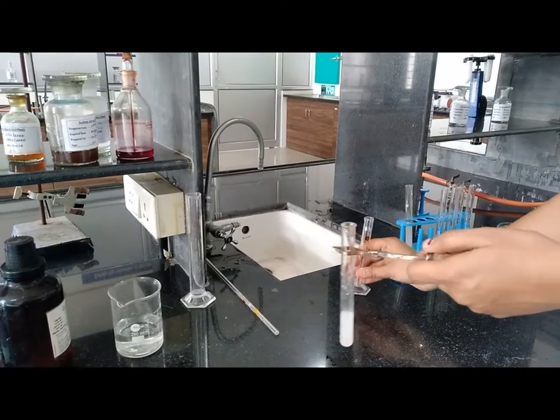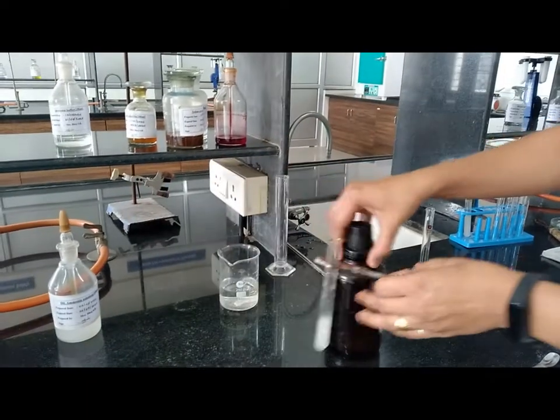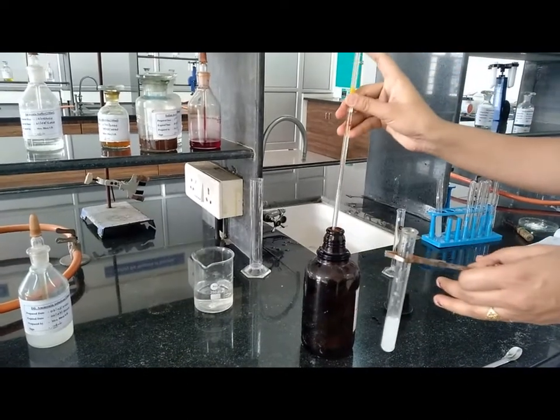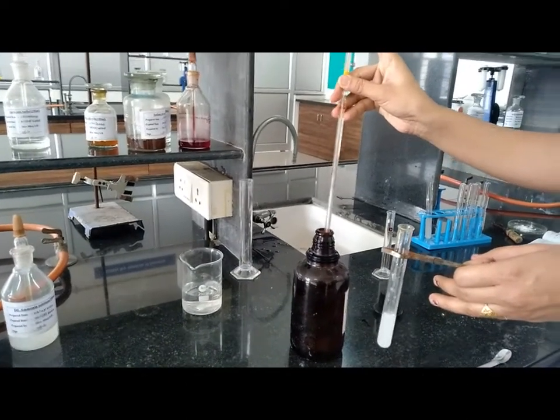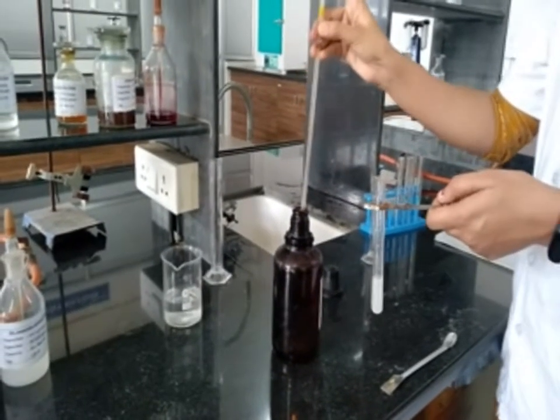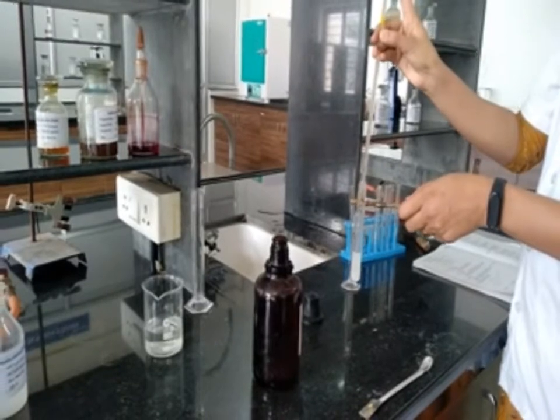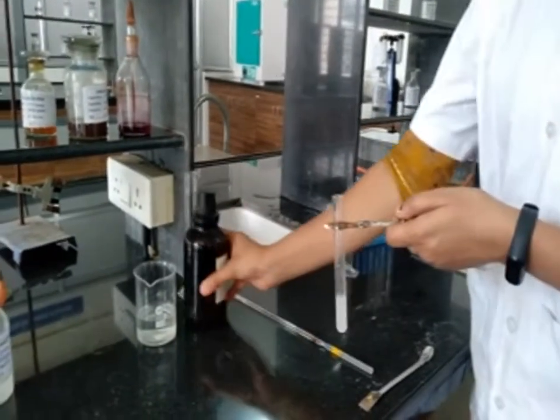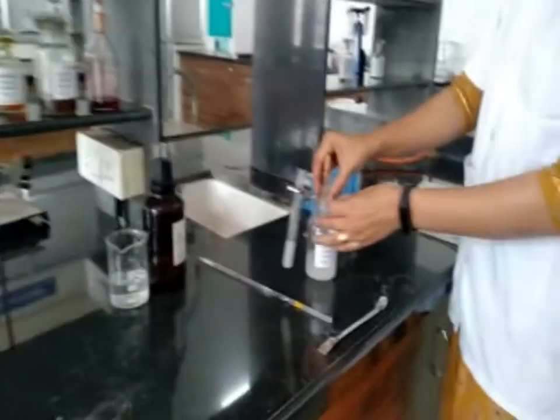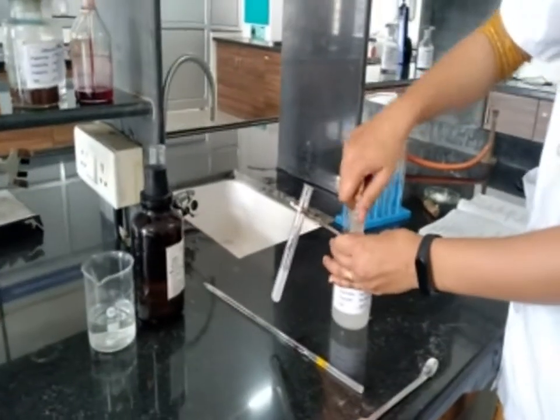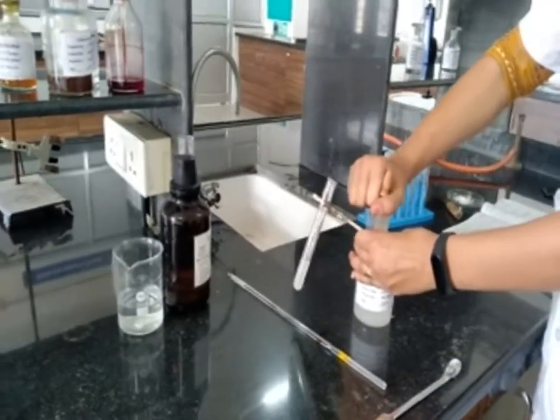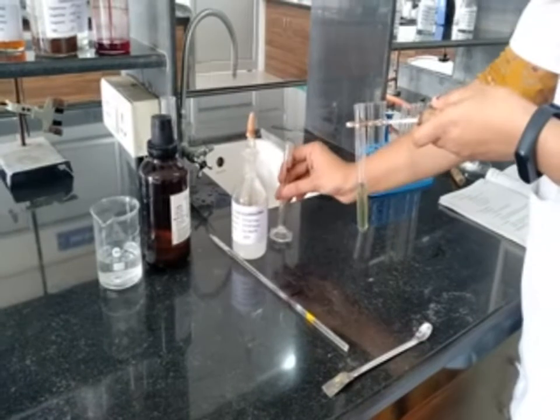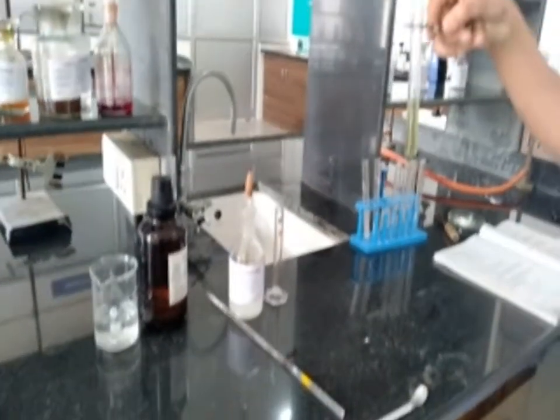Add 2 to 3 drops of bromine water and 1 ml of dilute ammonia solution. After addition of dilute ammonia solution, we got emerald green color. This is the end point.